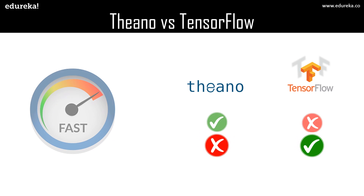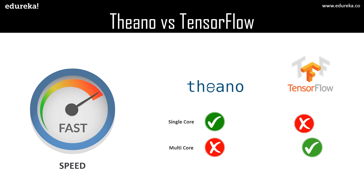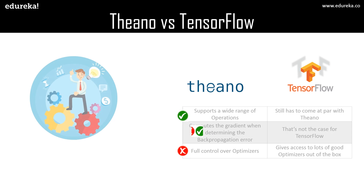If you talk about execution speed, Theano performs tasks faster than TensorFlow, especially single GPU tasks that run way faster in Theano. Whereas TensorFlow's execution speed is slower compared to Theano, but in multi-GPU tasks it takes the lead.